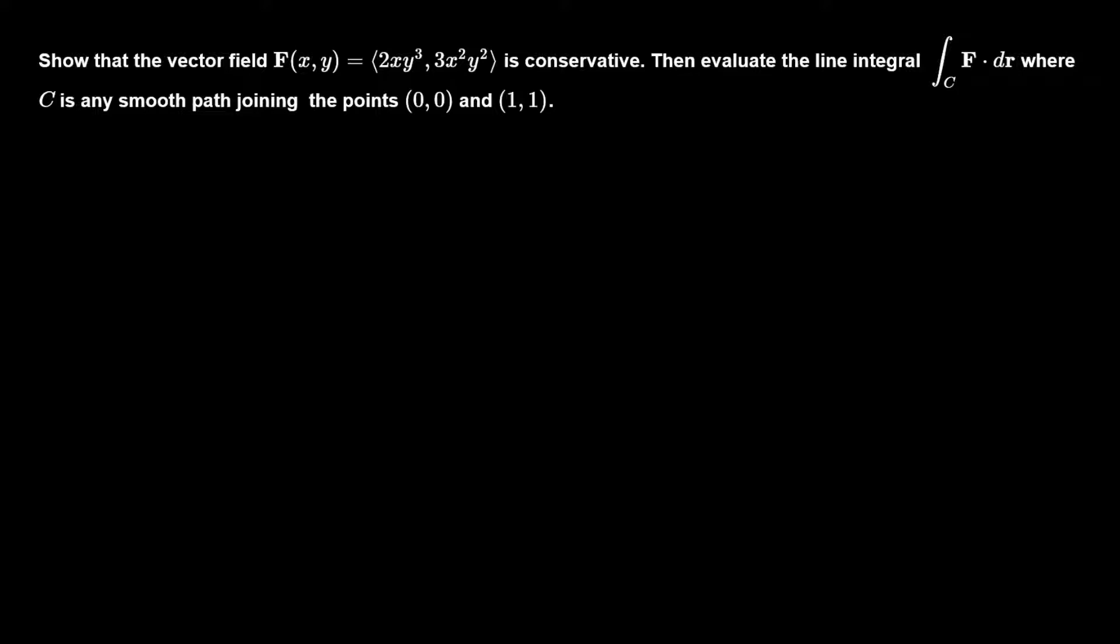So we need to show the vector field given here is conservative. First notice that the domain of F is all the points in R², and there are no holes. That means the domain is simply connected, and we denote the first component of this by P and this is Q.